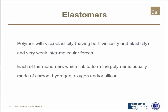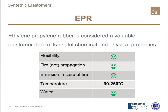Elastomers are polymers having at the same time viscosity and elasticity, characterized by very weak intermolecular forces. The most common synthetic elastomeric material used to manufacture cables is ethylene-propylene rubber. Practically all the characteristics we listed are good: flexibility good, fire propagation good, emission in case of fire intrinsically good — even if we can also add additives to enhance performance. Temperature is exactly the same as PVC, and water resistance behavior is still good.